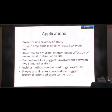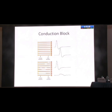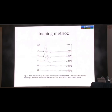The application of motor NCS is to assess the presence and severity of injury. In axonal loss, both proximal and distal amplitudes become very low, and if the injury is severe the CMAP will be absent. For conduction block, distal stimulation is normal but proximally you see a more than 50% drop in amplitude, telling you the injury is between those two segments. You can further perform an inching method — stimulating the nerve every centimeter to localize the exact site of injury — which is typically done in ulnar neuropathy at the elbow.